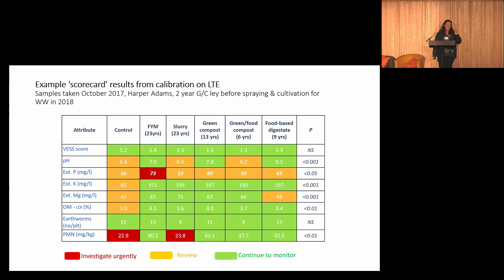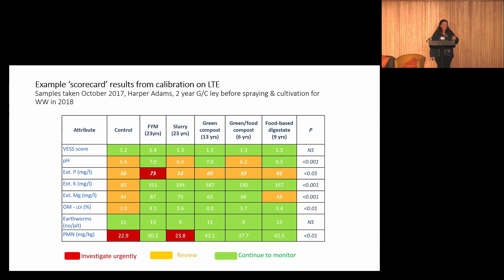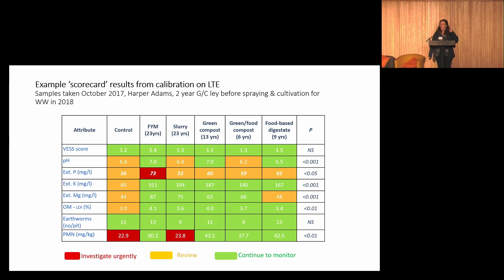Just to quickly show you some data we collected — control versus different kinds of organic matter additions. I don't have to try very hard to work out that adding organic materials to the soil makes it more green, or at least healthier in this context. One row to look across is phosphorus — the scorecard picks up phosphorus and says if it gets too high, that's a risk to water — prompting review in a way that's thinking about the environmental context.